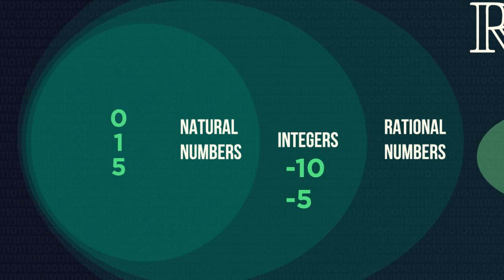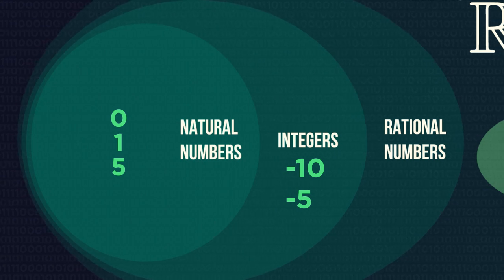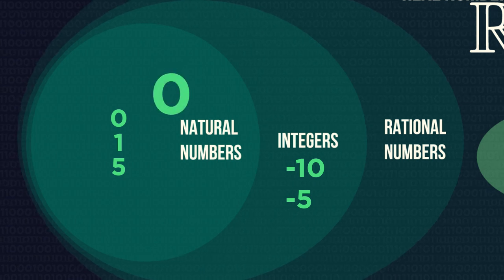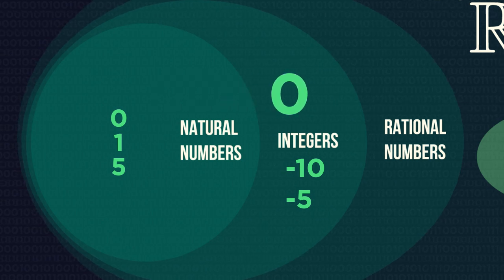Whereas natural numbers are just from zero and the positive counting numbers. Strangely, there is no general agreement amongst mathematicians about whether to include zero in the natural numbers or not. Sometimes zero is included.